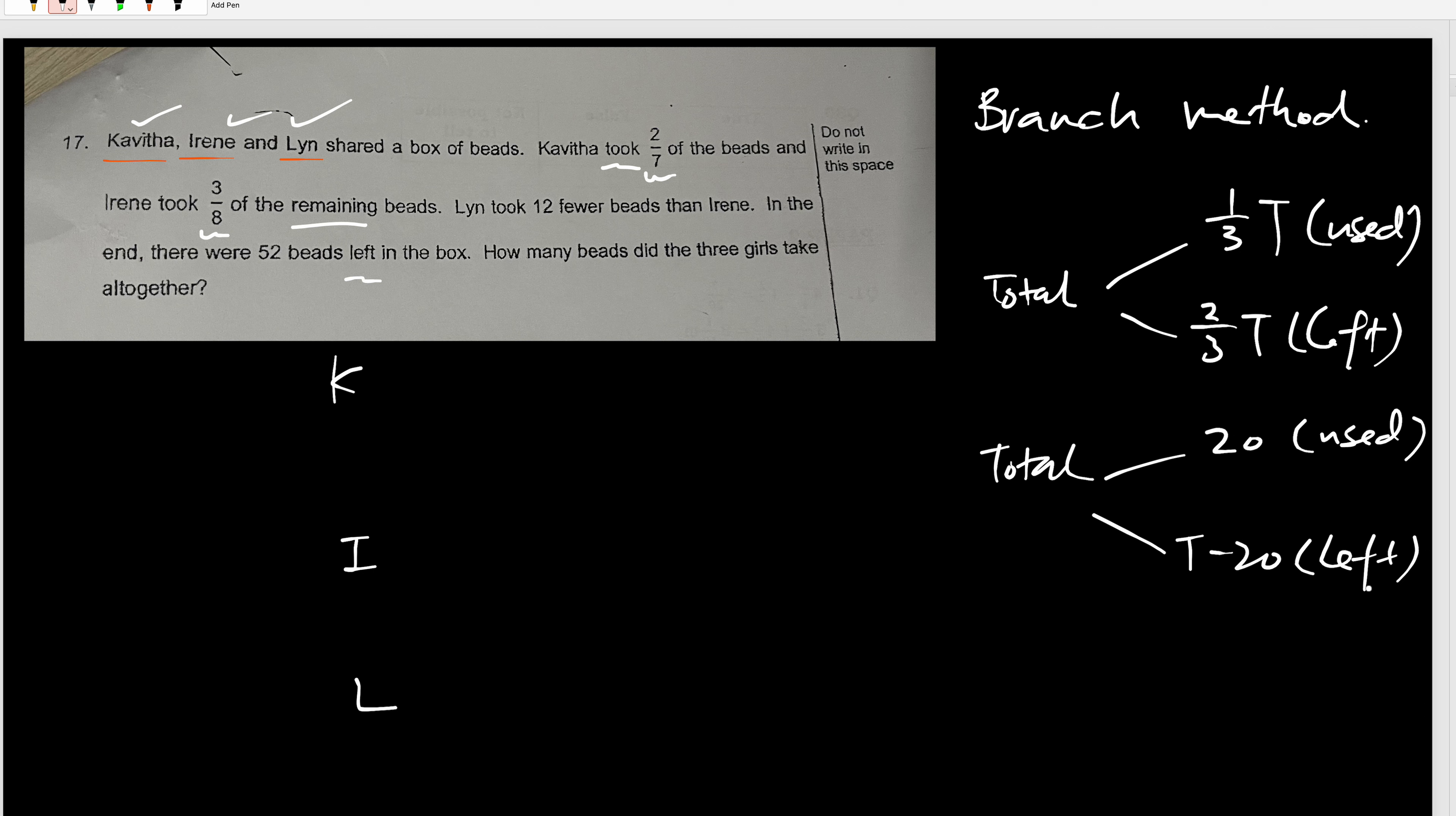So I'm going to use this over here. Now, three of them will give you the total, right? Because they share a box of bits. So meaning the total bits come from K, Irene, and Lin. The total number of bits will go to K, will go to I, will go to L. Now the question is, K receive how much? K receive 2/7 of the bits. So, 2/7 of T.